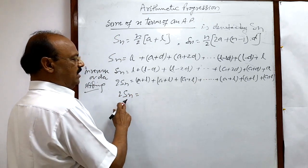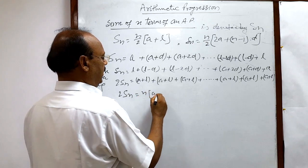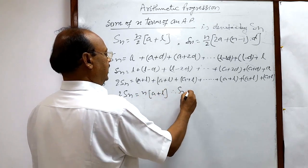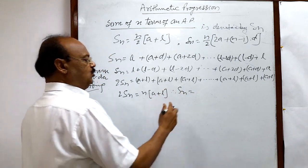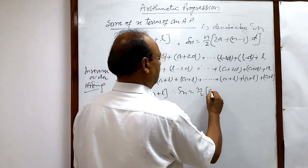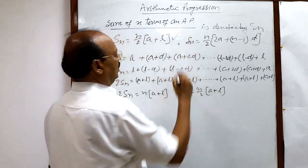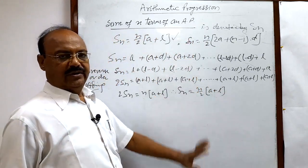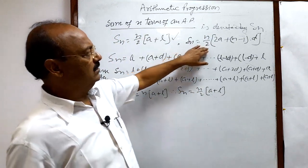We are getting a plus l a total of n times, because we are finding the sum of n terms, so there are n terms in each expression. Therefore 2Sn equals n times (a plus l), and dividing both sides by 2, we get Sn equals n/2 times (a plus l). This is the first formula.